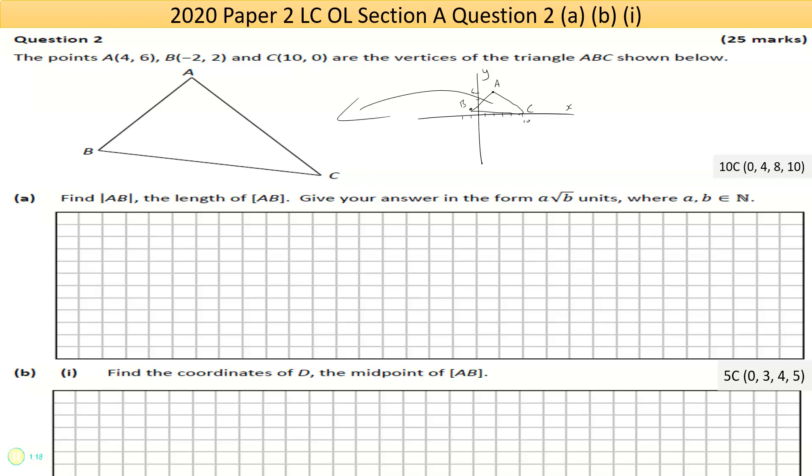So 4 on the x, 6 on the y will be here. That's your point A. Minus 2 on the x-axis and positive 2, that's your B value. And then 10, 0 on the y-axis, that's your C value. Now part A says find the length of AB between 4, 6 and negative 2, 2.